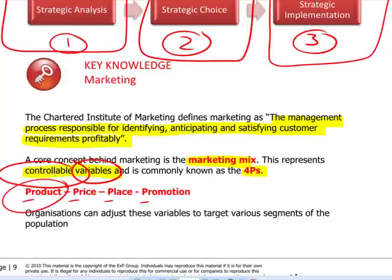For example, if we think of product — take Coca-Cola. We have the traditional classic Coca-Cola, Coca-Cola Light, Diet Coke, Coke Zero, and cherry-flavored Coke. So the product changes in terms of taste. But also the product has packaging: it could be a two-liter bottle, one-liter, half-liter bottle, or a can. All these are things which are controllable and can be changed in the product.